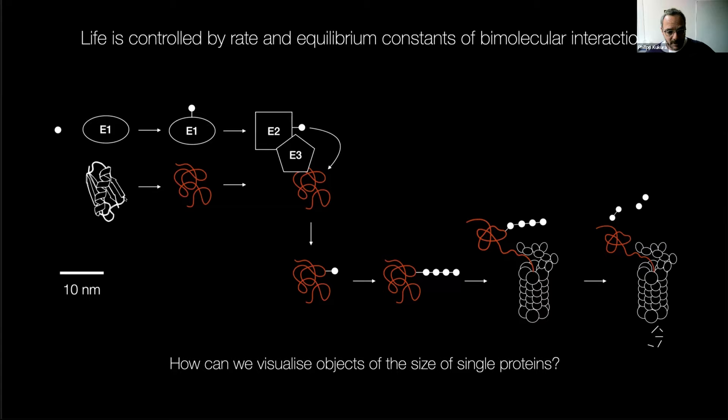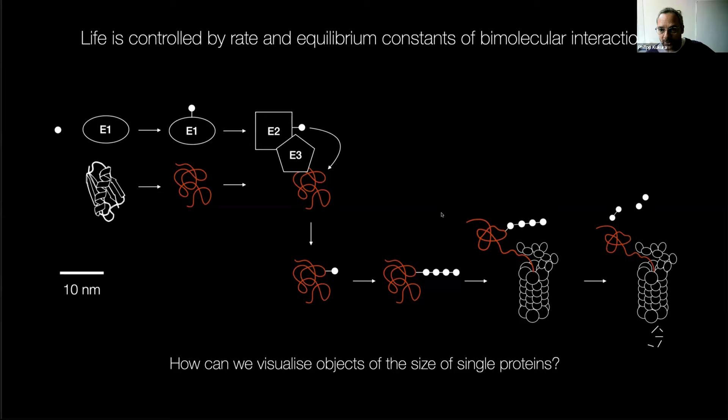We always draw these things like a chemist drawing reaction mechanisms with arrows, worrying about bonds formed or broken between atoms. Biology is no different, except most of the interactions are non-covalent. The question is how do you visualize this? One of the ways you can visualize something as small as a single protein is by interference.